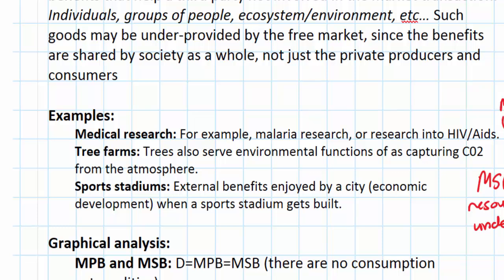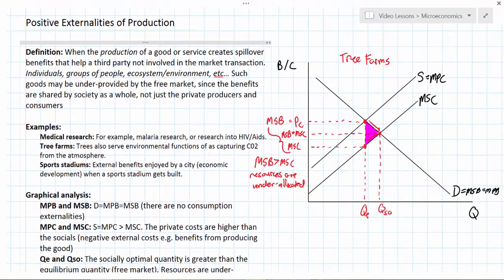Sports stadiums are a very controversial case — cities all over America and the world spend hundreds of millions of dollars a year subsidizing private sports teams in the construction of their stadiums. The argument is that these stadiums provide jobs in other industries, economic development, and improve older or dilapidated neighborhoods. There are external benefits enjoyed by those not directly involved in the production or consumption — that is the defining characteristic of a positive externality of production. Graphically, the free market equilibrium quantity is less than the socially optimal quantity because private cost is higher than social cost, due to the external benefits arising from production.